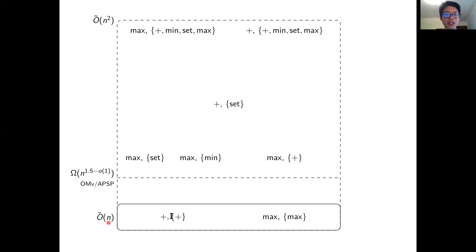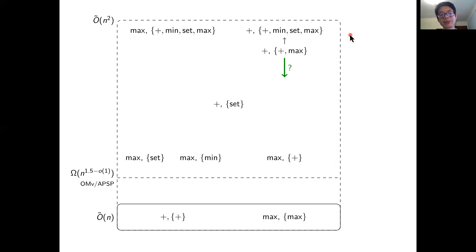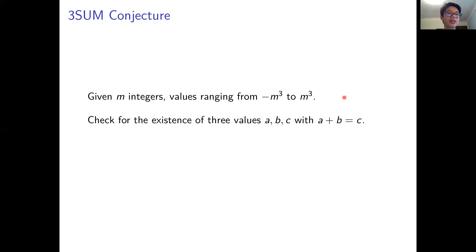Under the online matrix vector conjecture, none of these can be solved in roughly linear time — in fact they require roughly n to the 1.5 time. So if there's no roughly linear time solution for these problems, maybe they are really hard. We look at the hardness for a harder problem: one supporting plus updates, max updates, and plus queries, and ask whether it can be solved any faster than roughly n-squared time.